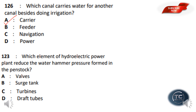Which element of a hydroelectric power plant reduces the water hammer pressure formed in the penstock? The options are: valves, surge tanks, turbines, and draft tube. Surge tanks reduce water hammer pressure in the penstock of a hydroelectric power plant.